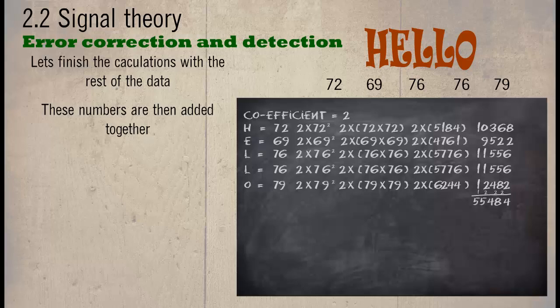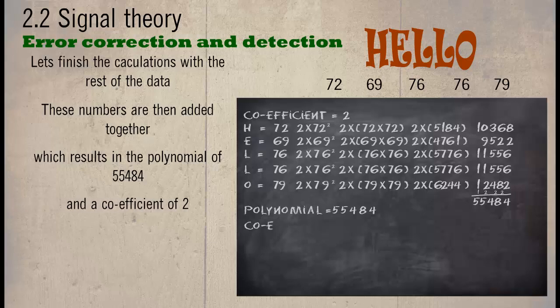These numbers are then added together, which results in a polynomial of 55484 and a coefficient of 2, which means the CRC is 255484.